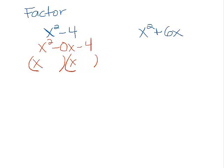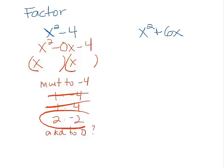We got x and x. That gets us x squared. What multiplies to negative 4? 1 times negative 4. Negative 1 times positive 4. 2 times negative 2. I think I got them all. Which of these things add to 0? Nope. Nope. Yep.